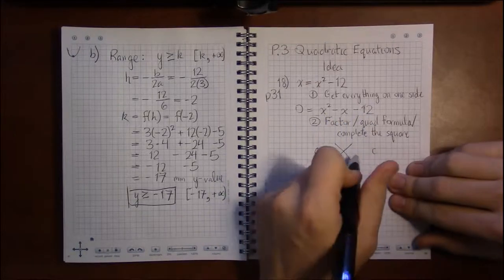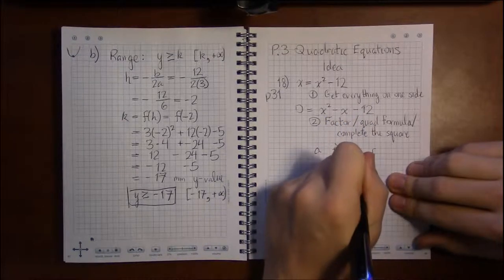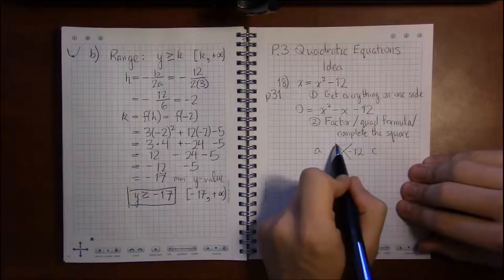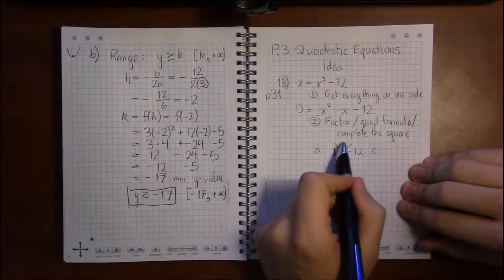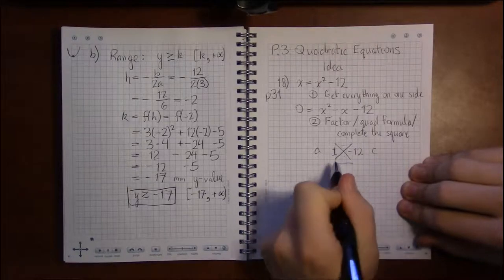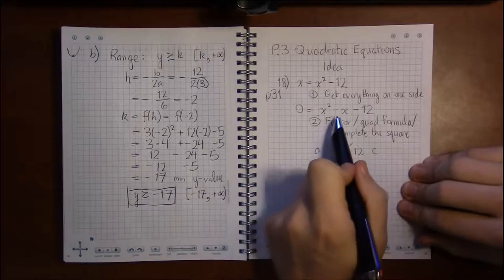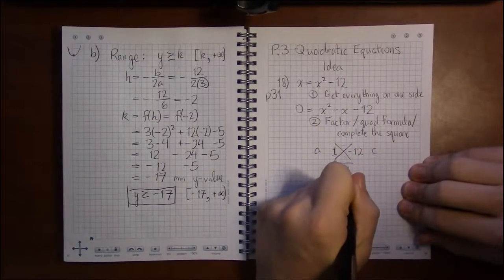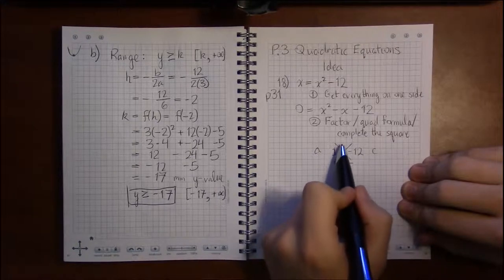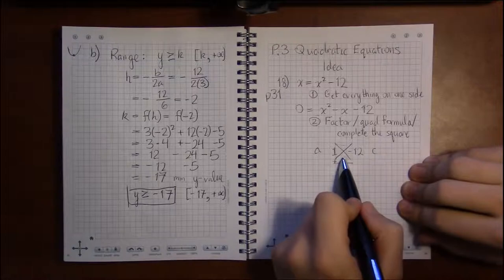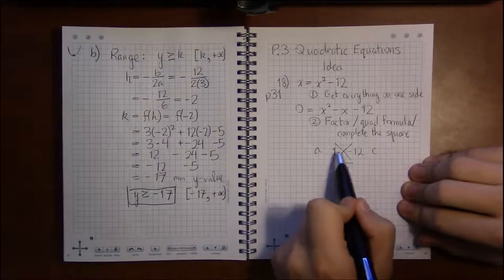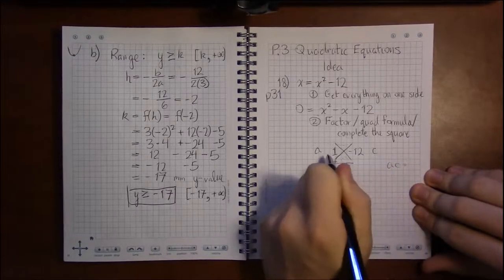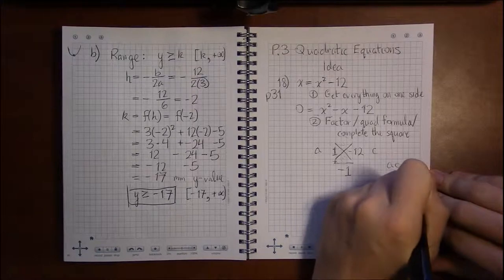So in this case, our a, not being there, we can assume it's one, and our c, the constant, is minus 12. Now the idea is that the numbers we fill in here should add up to b—the numbers in top and bottom should add to b, minus one. But we can only put numbers in here that multiply to the same thing as one times negative 12.